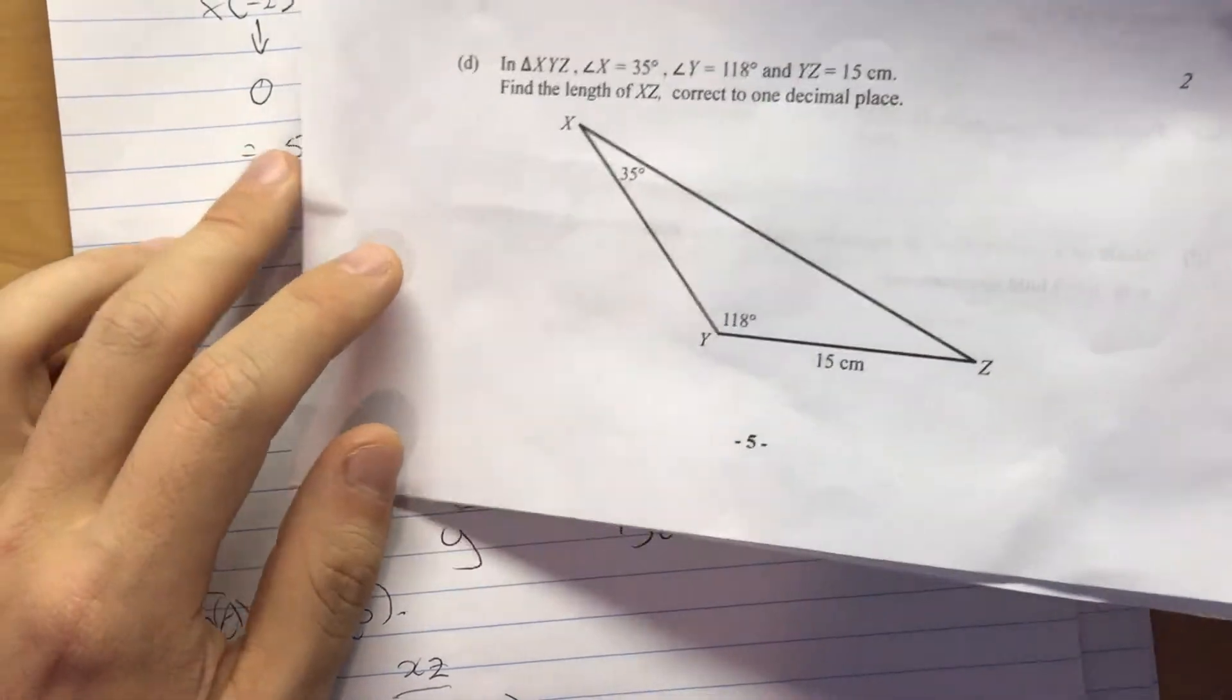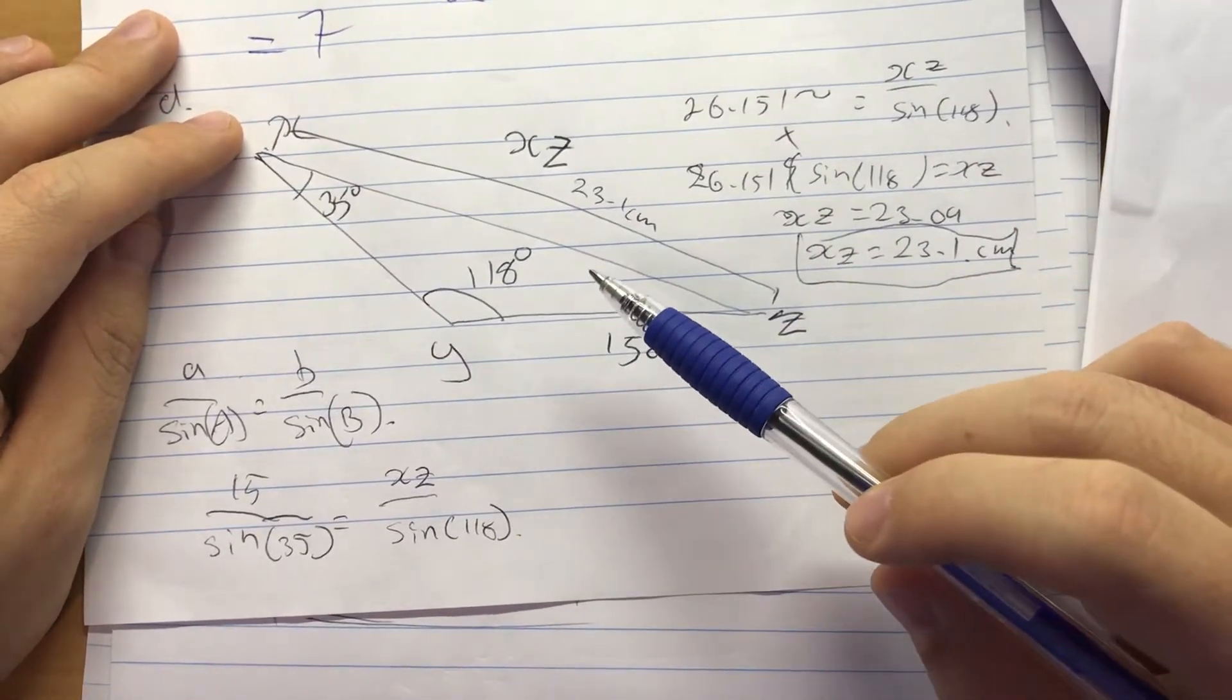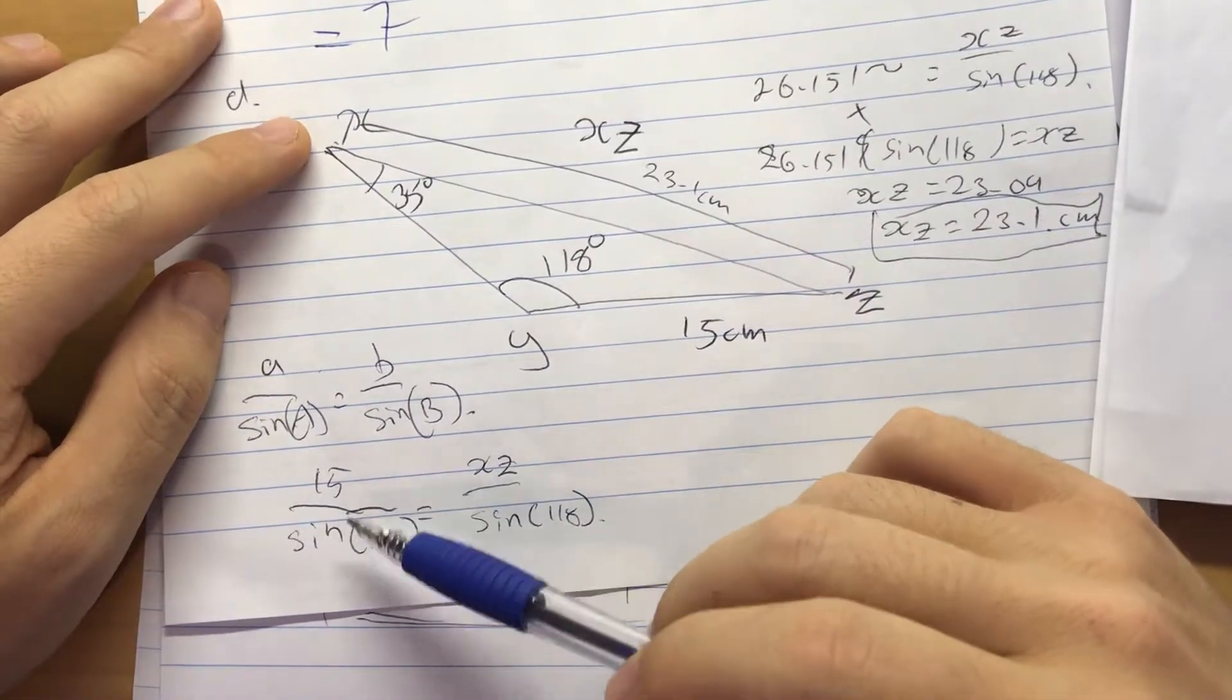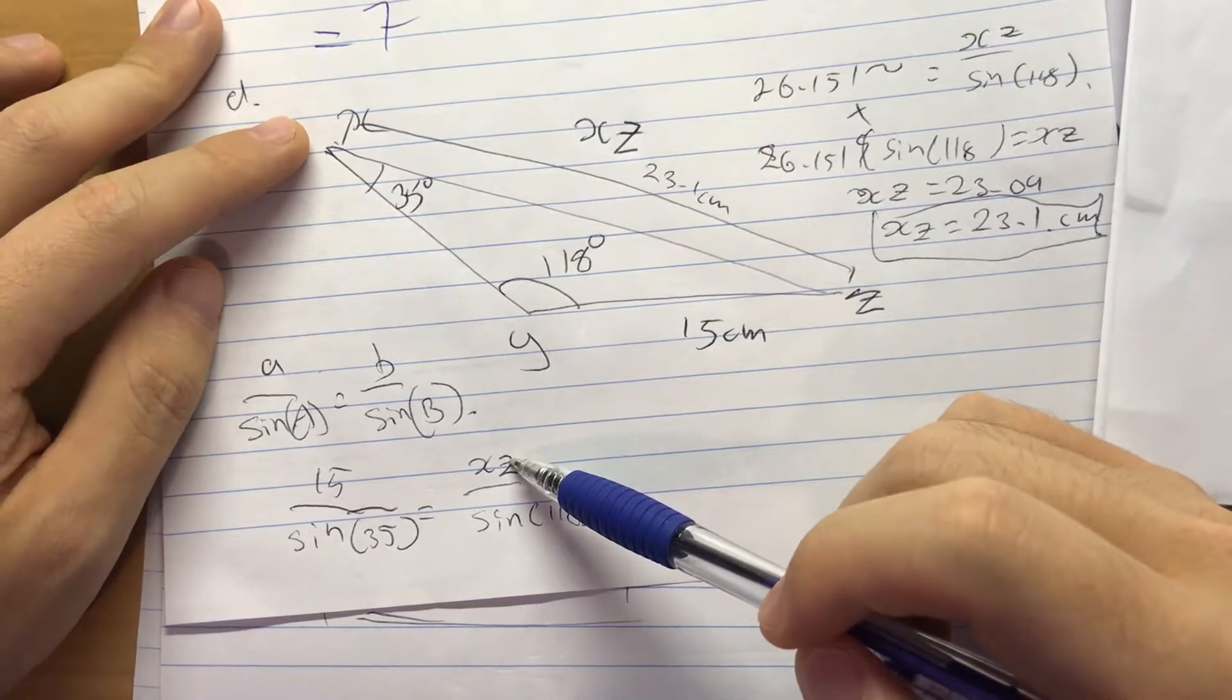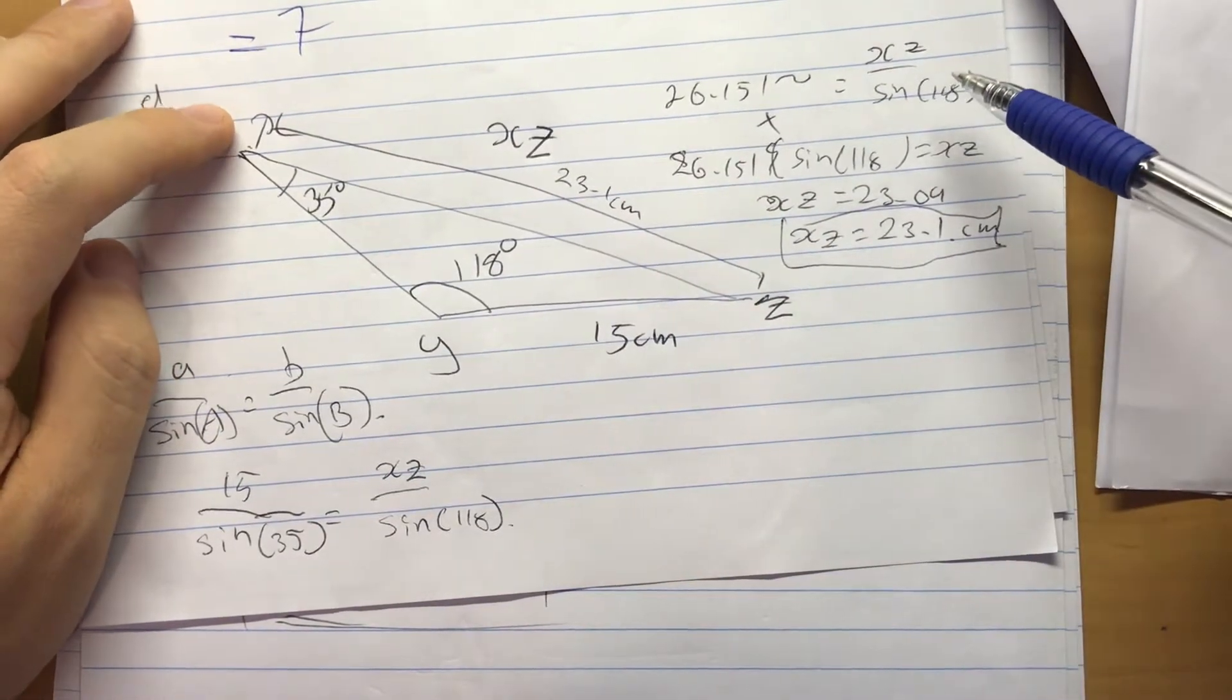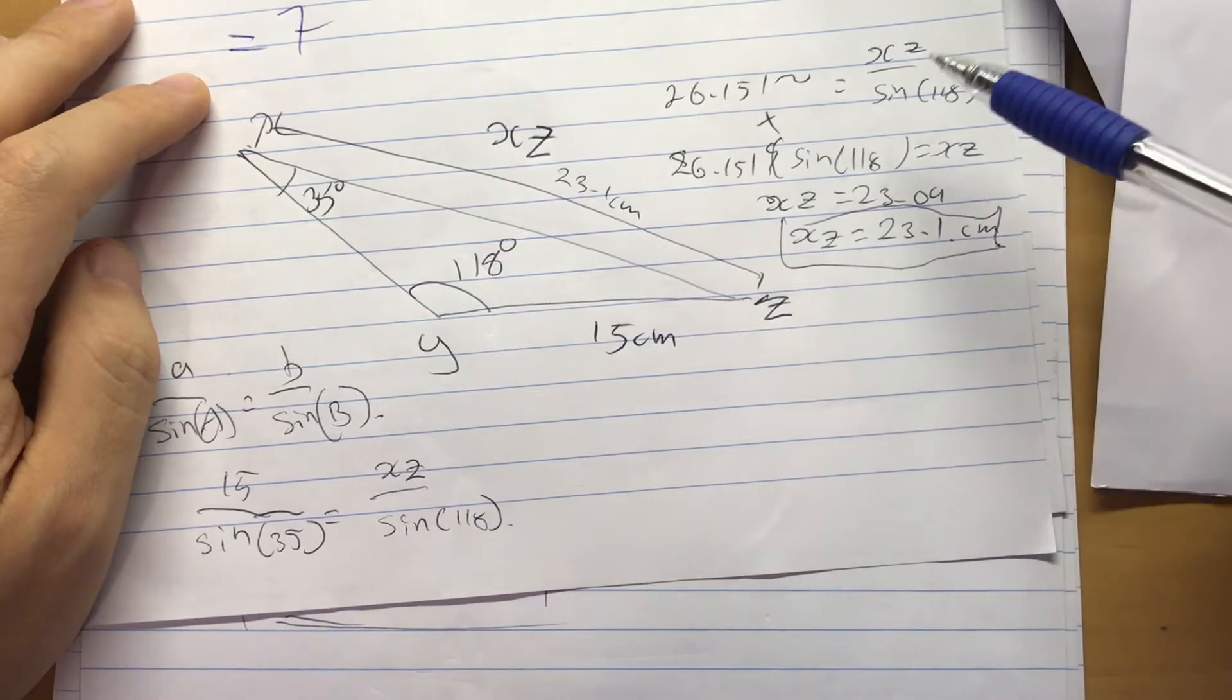So find that length. So it looks like a sine rule. And that's what is being done. So a over sine A equals b over sine B. So 15 over sine 35° is equal to the unknown side over sine 118°. Okay. And then it continues here which is kind of annoying because you might read this first if you weren't sure where to start. And this wouldn't make as much sense unless you read that first.